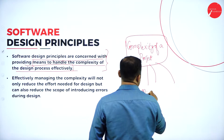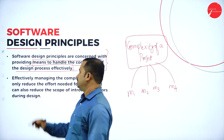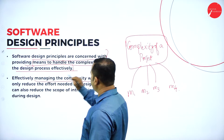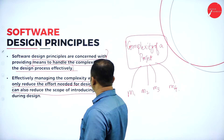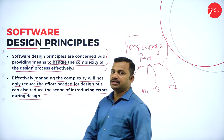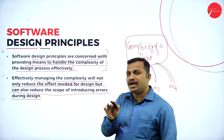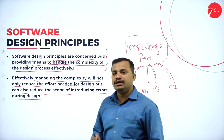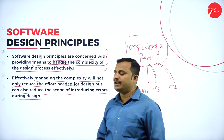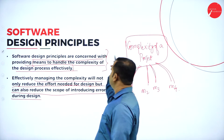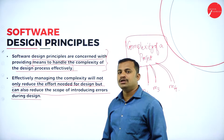That is M1, M2, M3, M4. Effectively managing the complexity will not only reduce the effort needed for design, but also reduces the scope of introducing errors during design. By dividing the big problem into smaller sub-problems, it not only increases the effectiveness of the design principles, it also helps in reducing errors. Minimal error can be maintained.